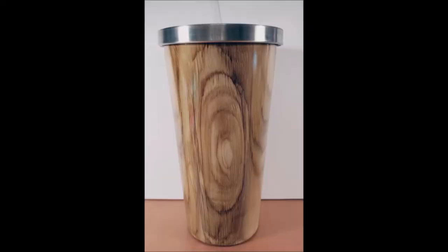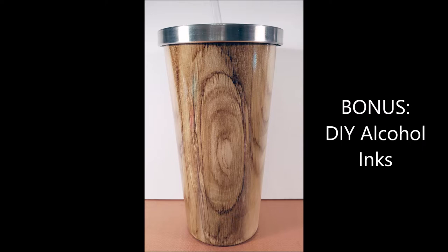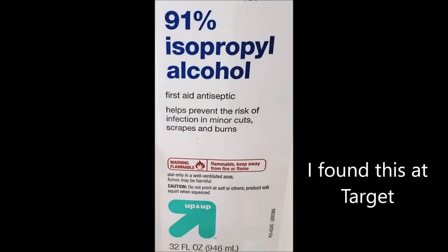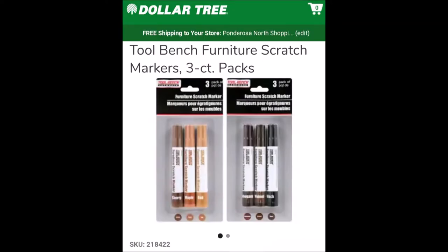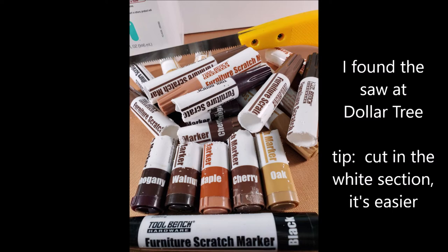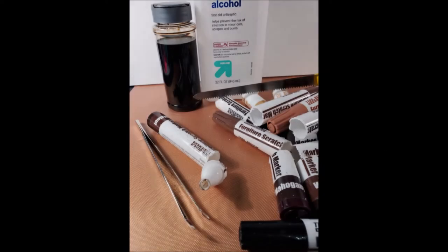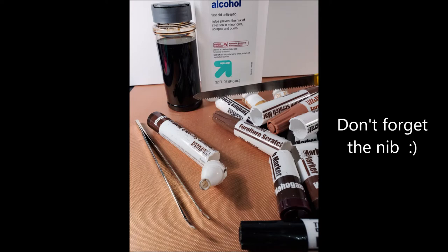I hope you enjoyed this tutorial. And now here's the bonus section where you can see how I made some alcohol inks for the tumbler that I made yesterday. I started with Dollar Tree furniture scratch markers. And I cut them with that little saw that I found at the Dollar Tree. And don't forget the nibs because there's a lot of ink in there too.